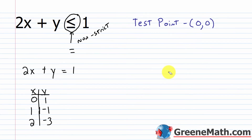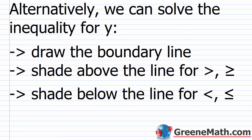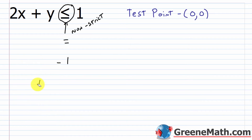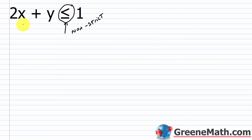Now let me show you the fast way — some books skip this altogether, which is a shame because it's way faster. Alternatively, we can solve the inequality for y, draw the boundary line by replacing the inequality with an equal sign, and then shade above the line for greater than or greater than or equal to, and shade below the line for less than or less than or equal to. In the previous example, solving for y gives: y is less than or equal to negative 2x plus 1.